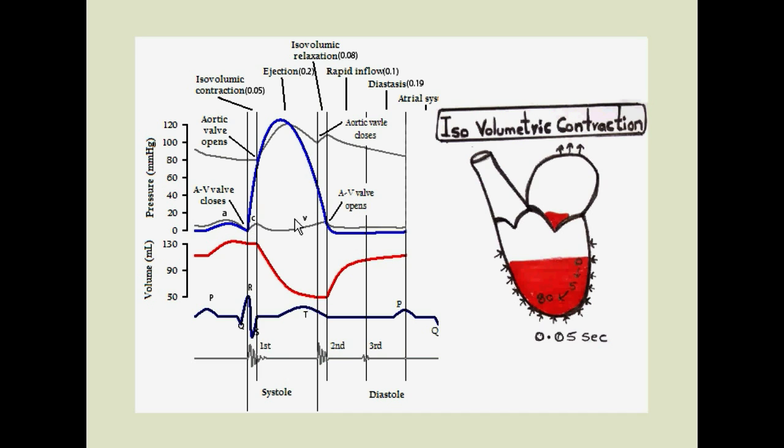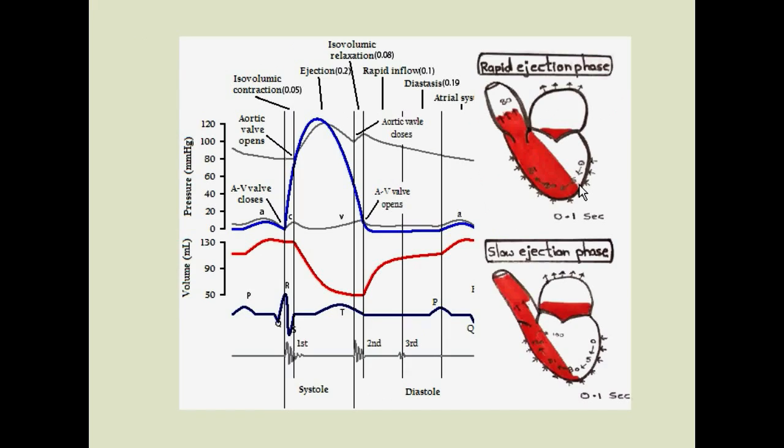Now as atria start collecting blood from the lungs it gets its pressure increased and that is represented as C wave. At a certain point we will have enough pressure in the ventricle to cause the semi-lunar valves to open. It is the point where we can see that ventricular pressure is overcoming the aortic pressure. As we have discussed earlier, it is around 81 mm of Hg.